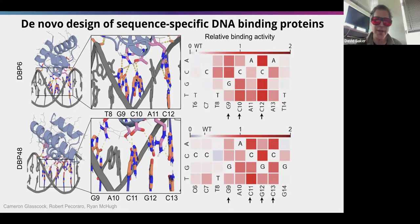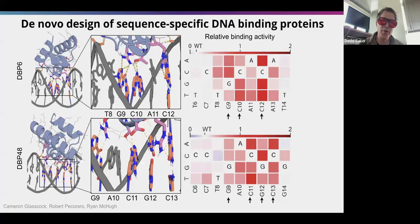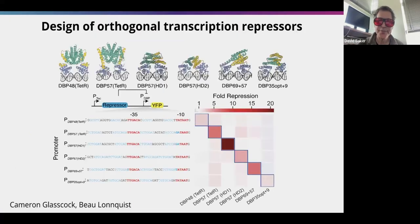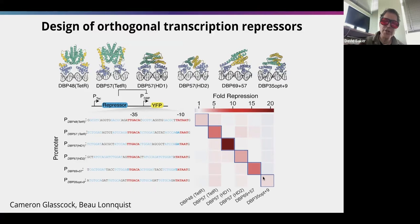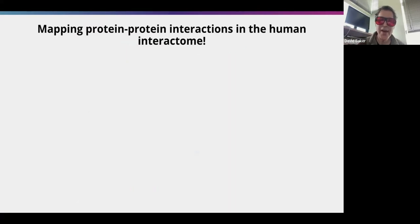We can also design proteins that bind to DNA. DNA has a very regular structure, and we design proteins that insert amino acid side chains to interact with specific DNA bases, achieving very high specificity for particular DNA sequences. We're excited about this as a new way to control DNA-related processes — both directing which proteins get made and enabling genome editing for gene therapy.